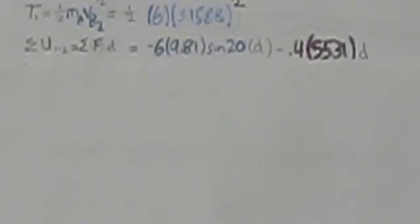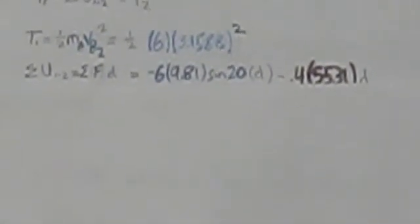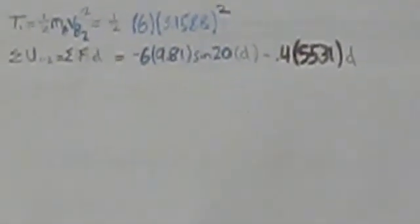Applying the principle of work and energy: T1 + ΣU(1→2) = T2. T1 = 0.5 × 6 × 3.1588² The work done on the block is: −6·g·sin20°·d − 0.4·55.31·d. Since the block comes to rest at its highest point, T2 = 0.5 × 6 × 0² = 0.